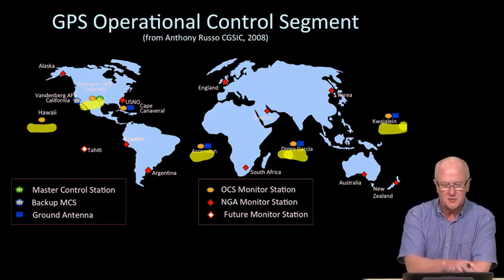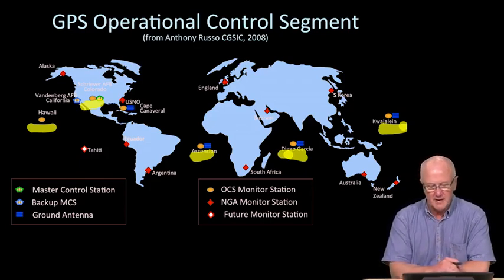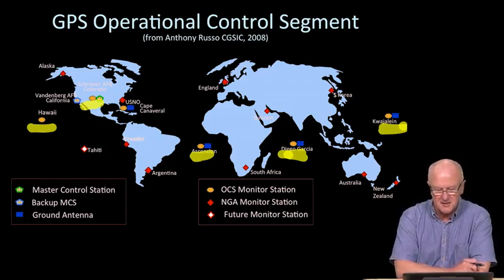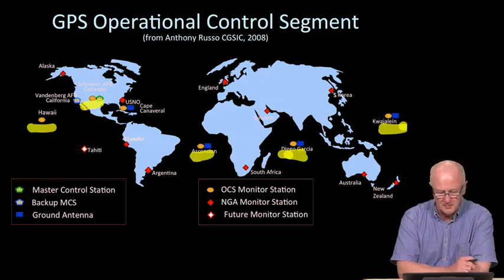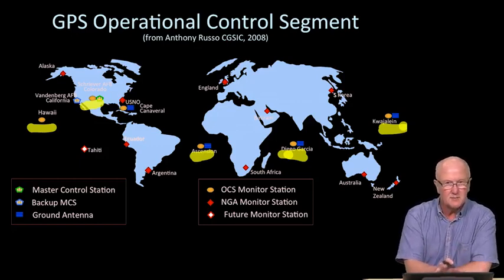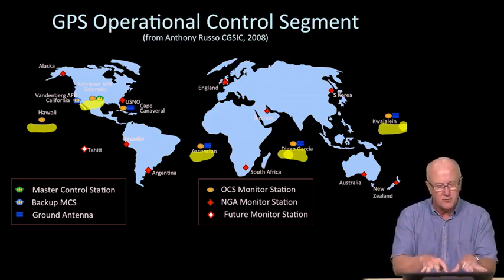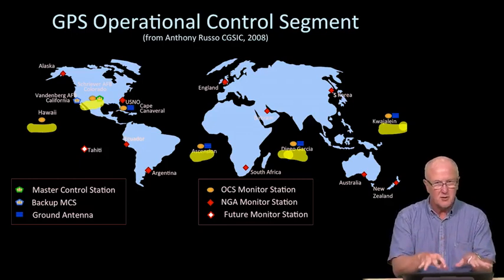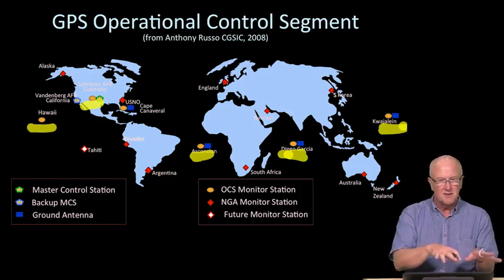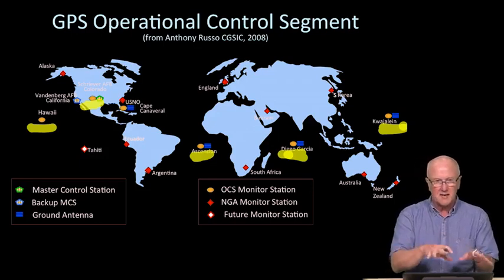Spread along the globe like that, they maintained fairly full coverage of the whole constellation. From time to time, one of the satellites would not be in view, but for the most part, all the satellites were in continuous view. Since then they've augmented that basic network with additional stations—the red diamonds—and they have plans for some future monitoring stations as well. All of those items you see on that world map are ingesting GPS measurements. The location of these stations is very well known, so we have the GPS problem in reverse.